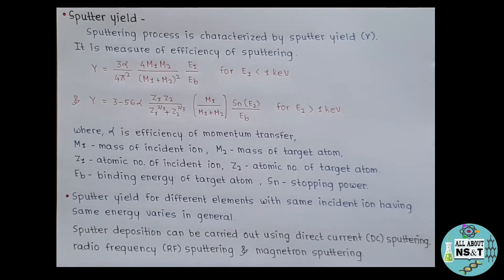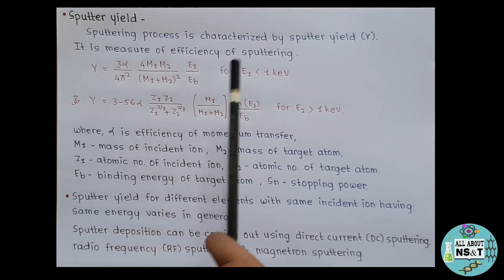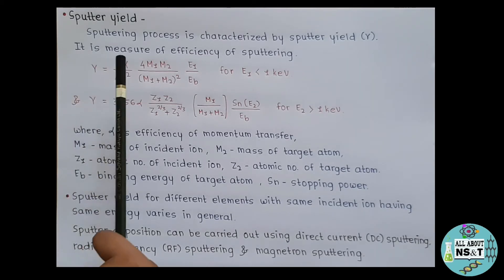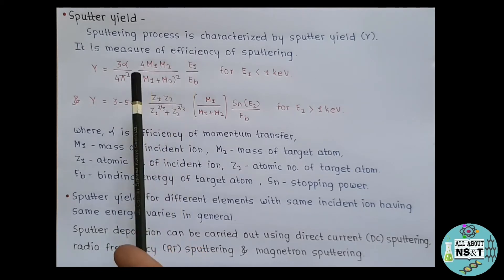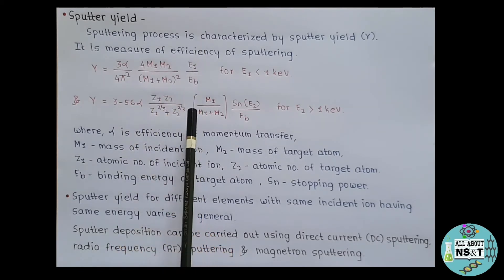Talking about sputtering, it is also important to understand the concept known as sputter yield. Sputtering process is characterized by sputter yield. It is a measure of efficiency of sputtering. And the equation for sputter yield is: Y equals 3 alpha over 4 pi squared for M1 M2 divided by M1 plus M2 squared E1 over Eb, where E1 is smaller than 1 kilo electron volt.